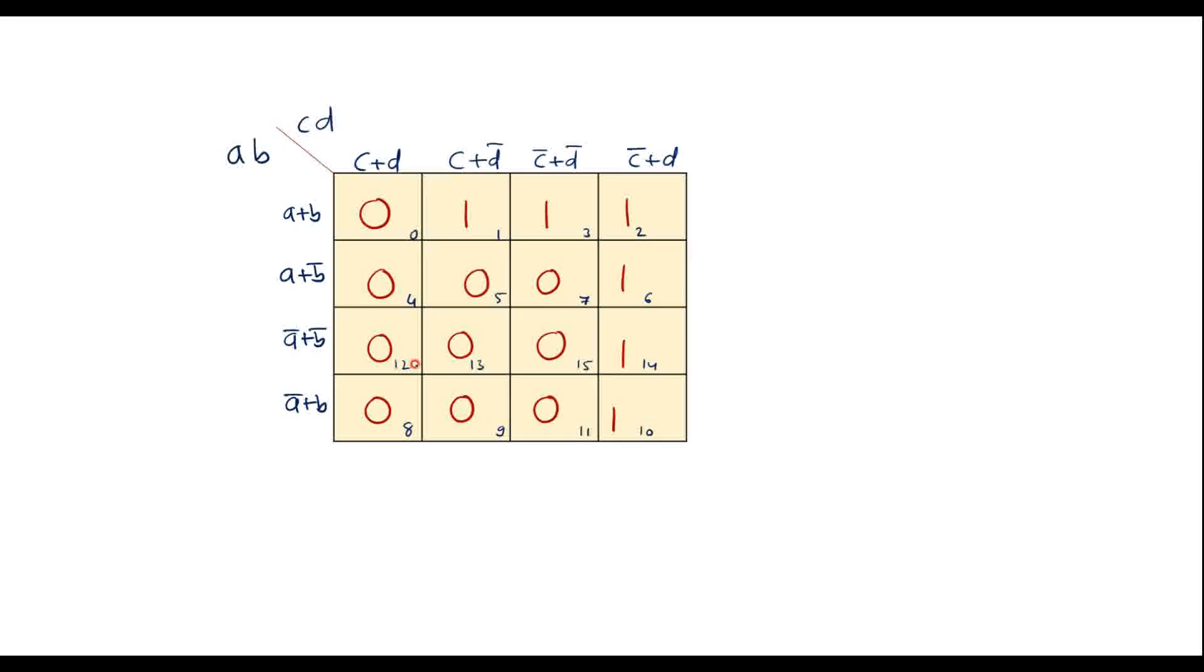So now here with the help of 1, 2, 3, 4, these together I can make a quad. So octal is not possible. I can make a quad here. Using this I can make a quad.